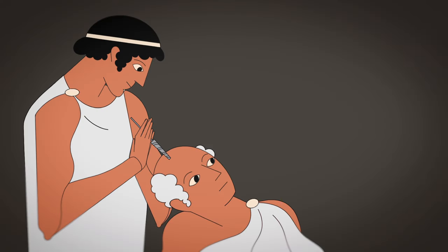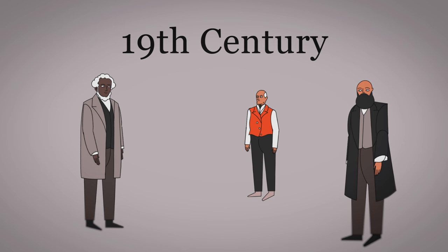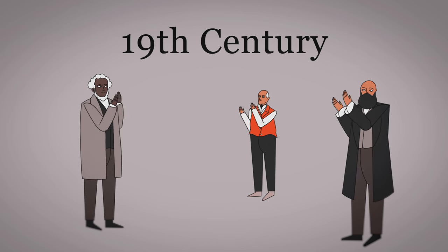This early surgery involved drilling a hole in the skull to let blood escape and relieve pressure on the brain. Trepanation had sizable risks, but it wasn't until the 19th century that scientists would make the next leap forward in seizure treatment.